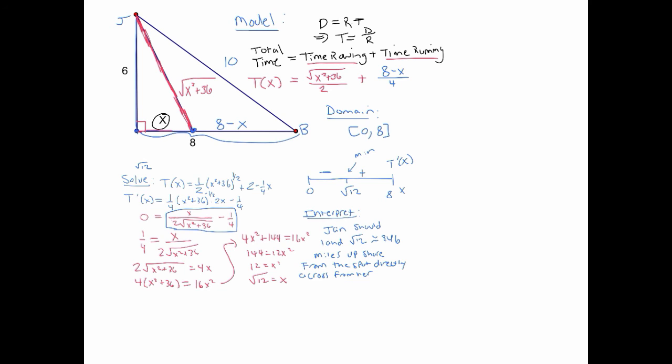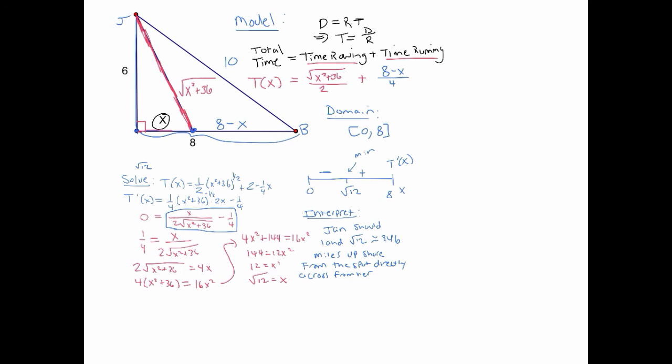If we also want the minimum time, we plug √12 into T(x): T(√12) = √(12 + 36)/2 + (8 − √12)/4, which evaluates to approximately 4.598 hours. That's about a half hour shorter than going directly to the boathouse or going straight to shore and running. So the calculus analysis saved her about half an hour — a tricky problem, especially the modeling part, but a good example of an optimization problem.